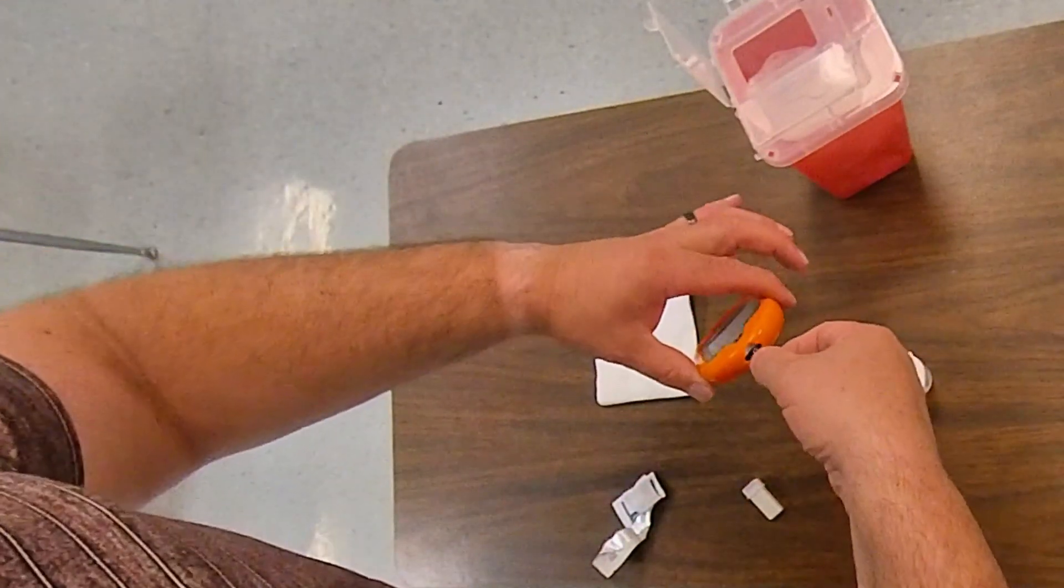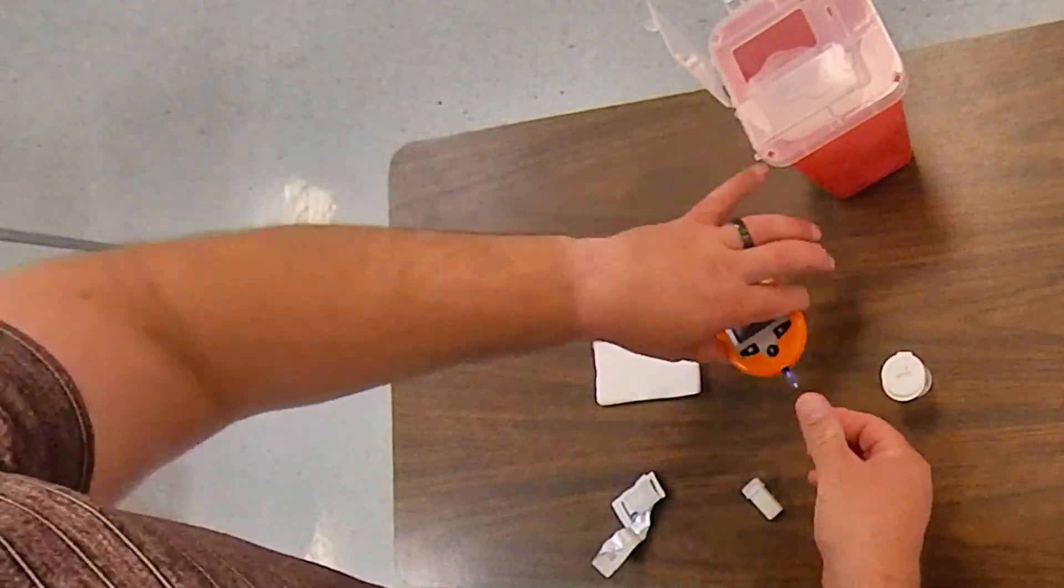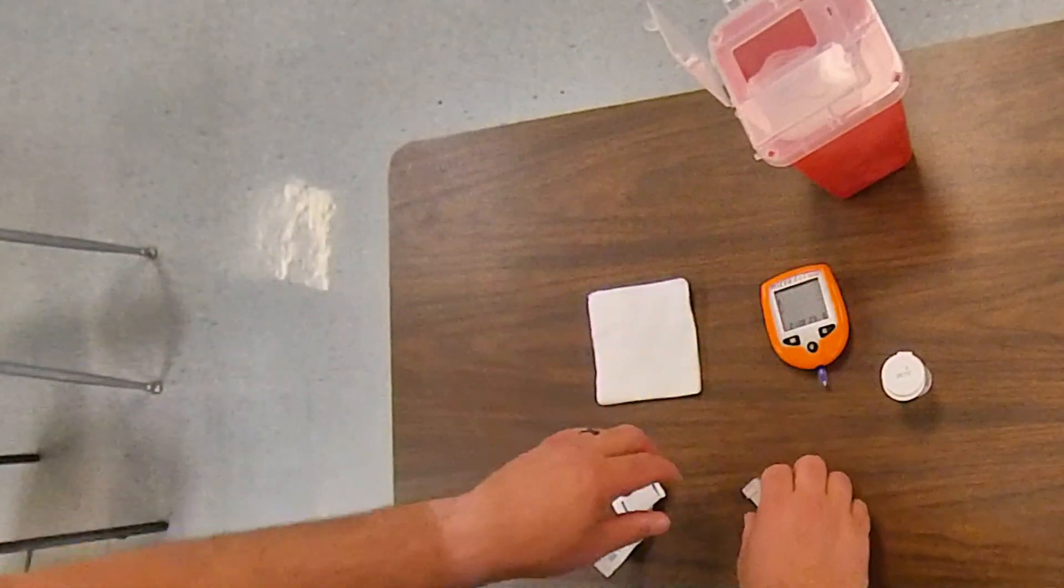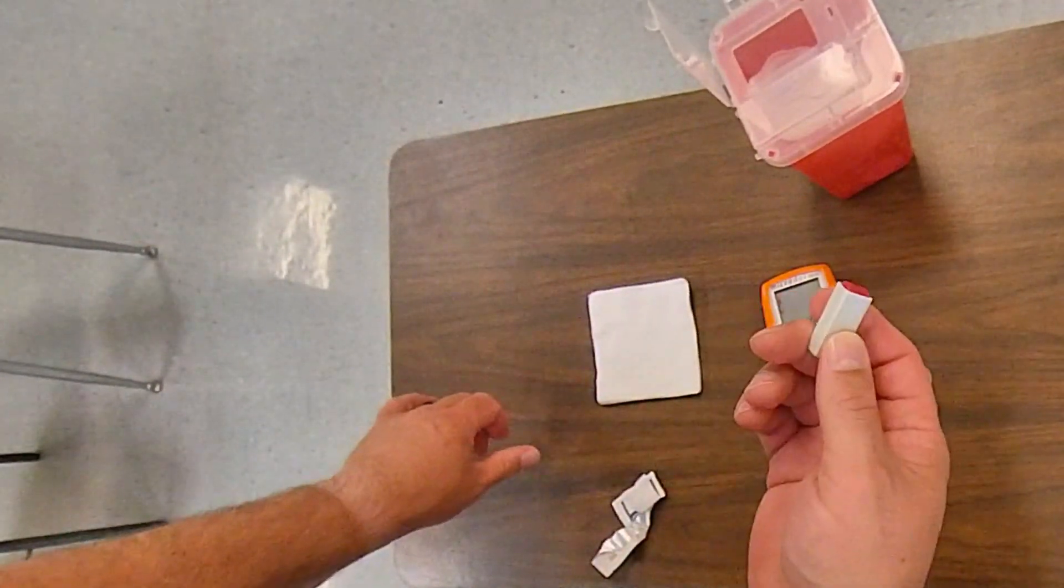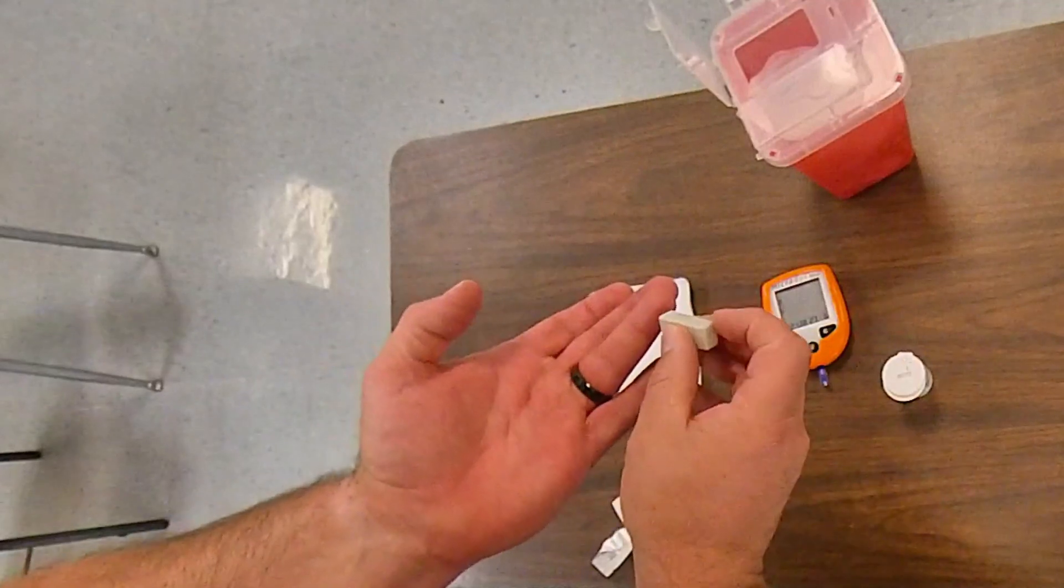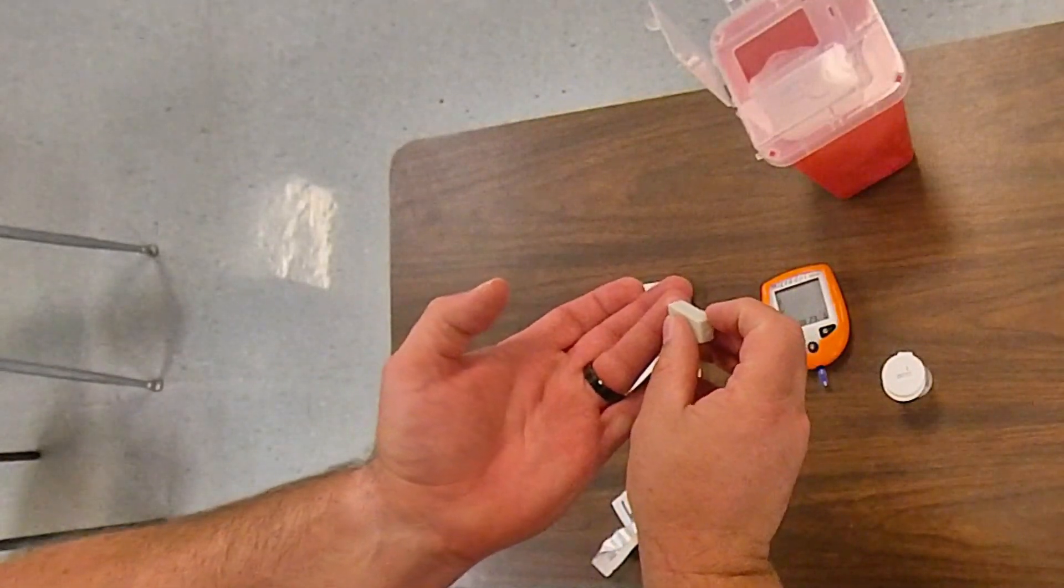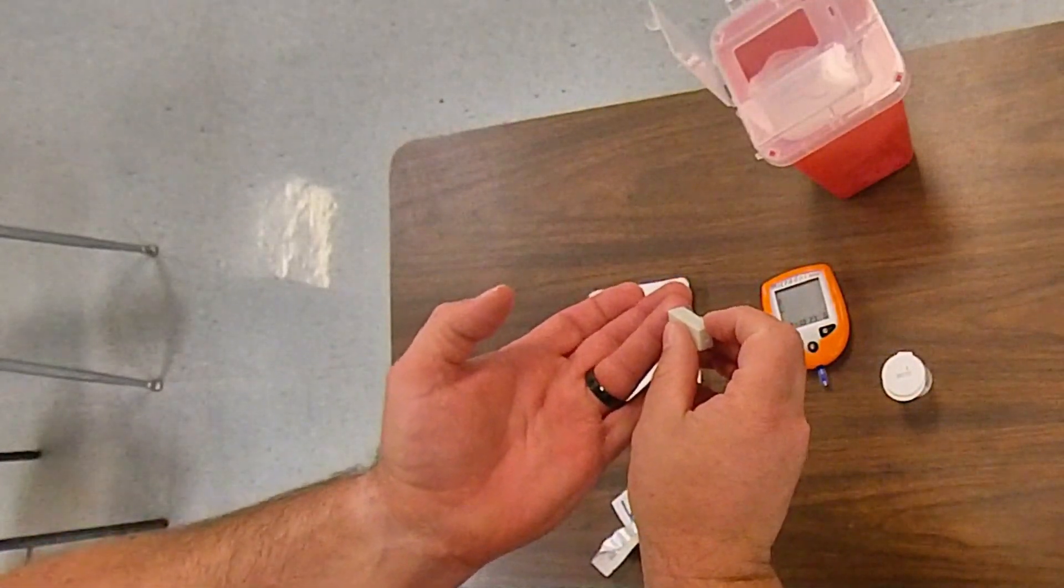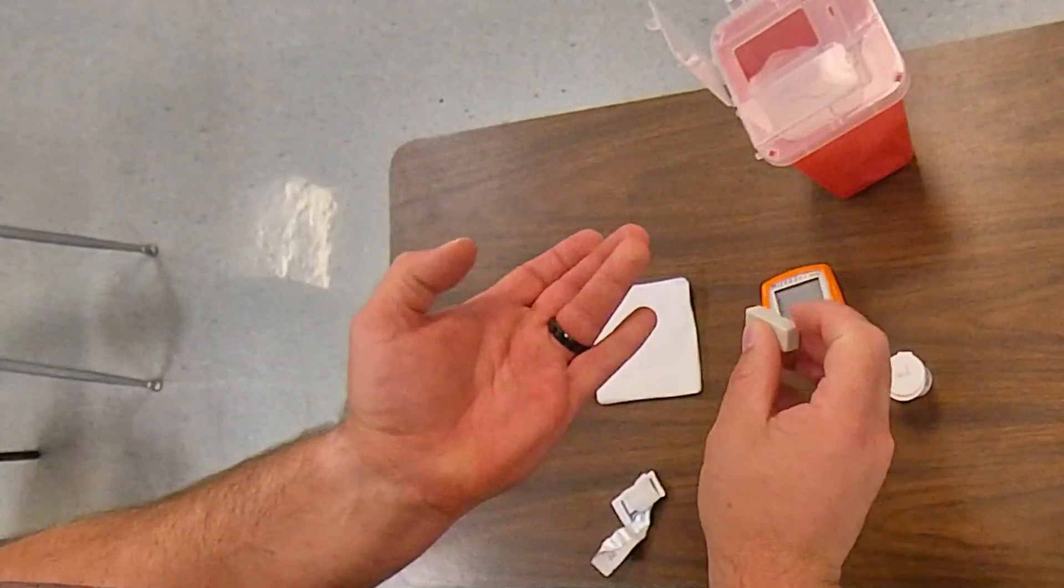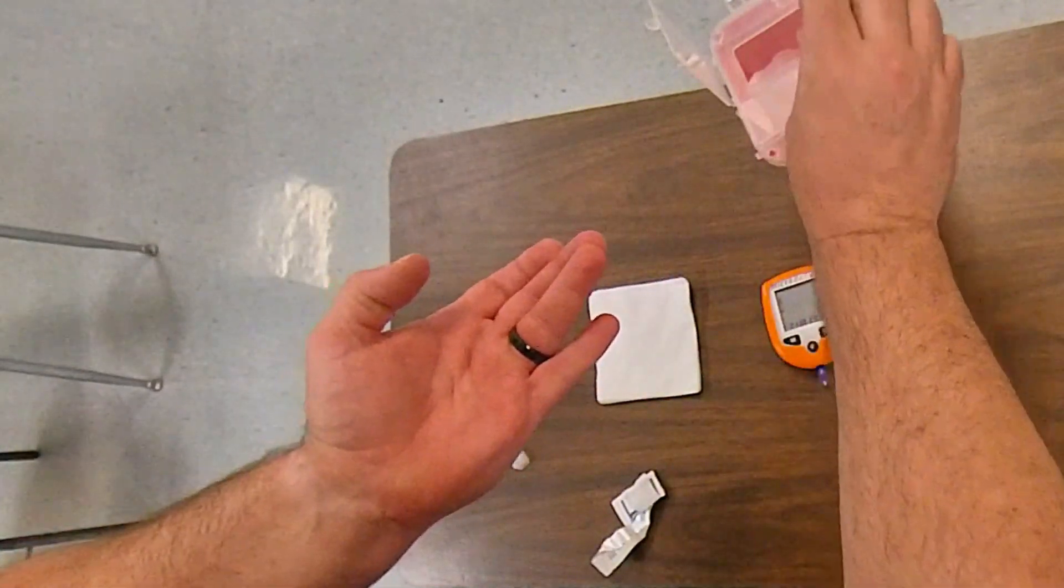Now I'm going to go ahead and insert my strip so it is ready. It turns on. This is my lancet and it's an automatic one so what I have to do is push it against the skin. So I warn the patient, tell them it's going to be a little bit of a prick, and that immediately goes in the sharps container.